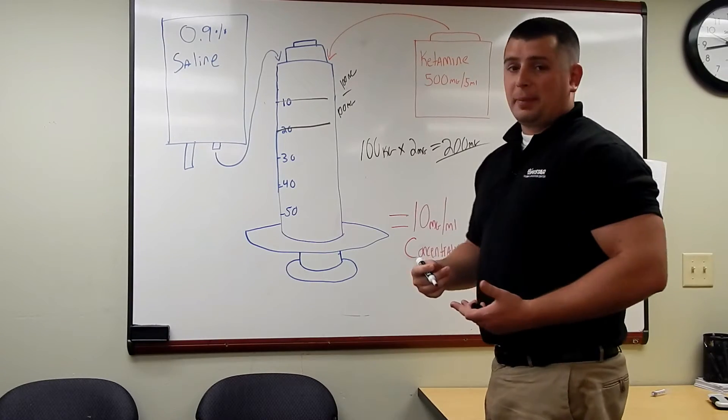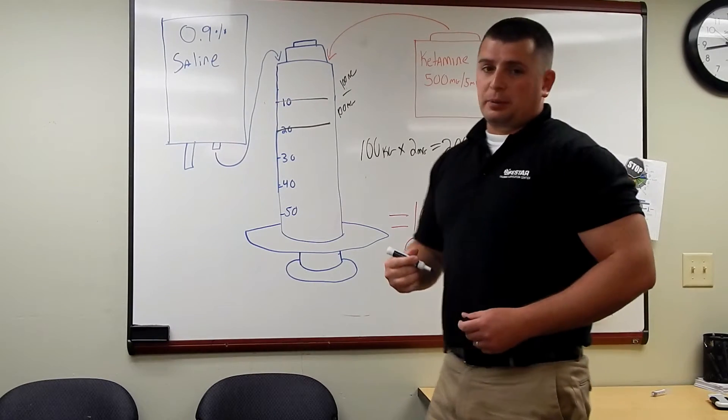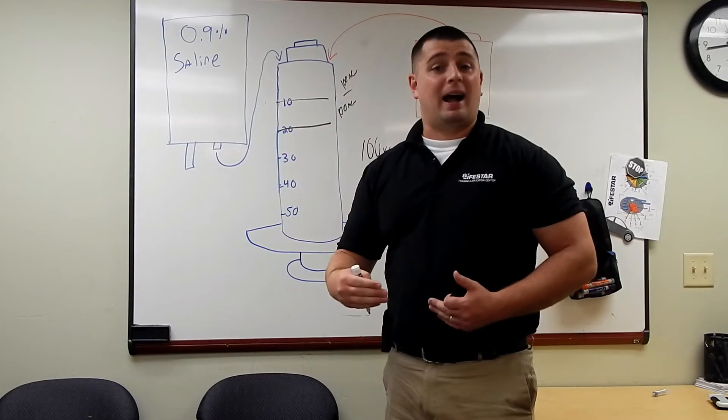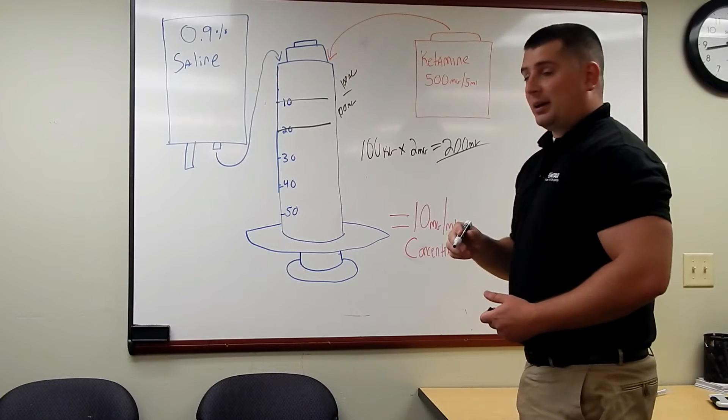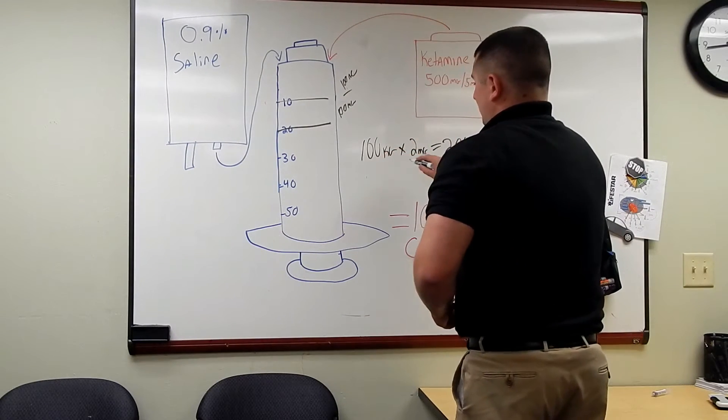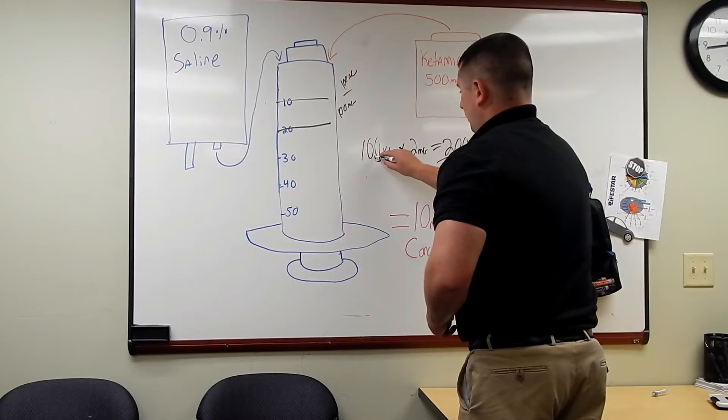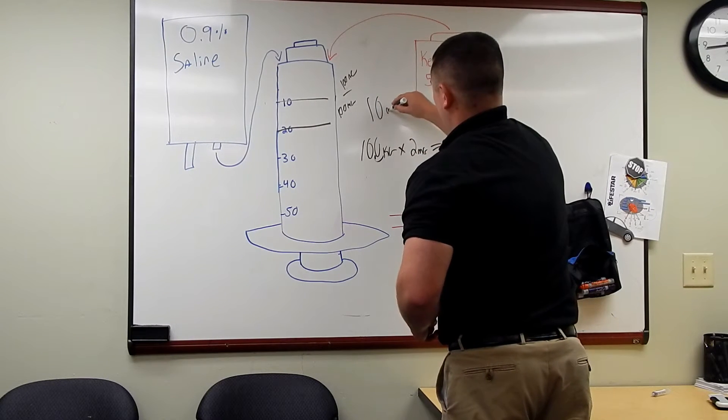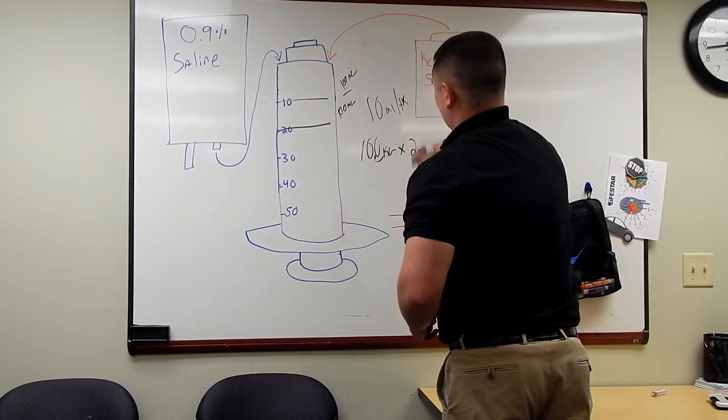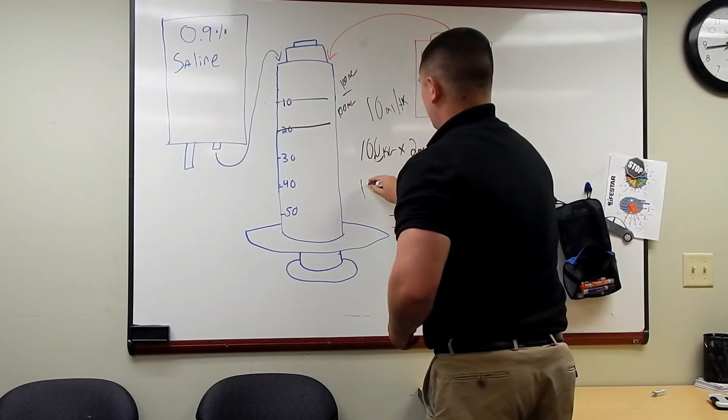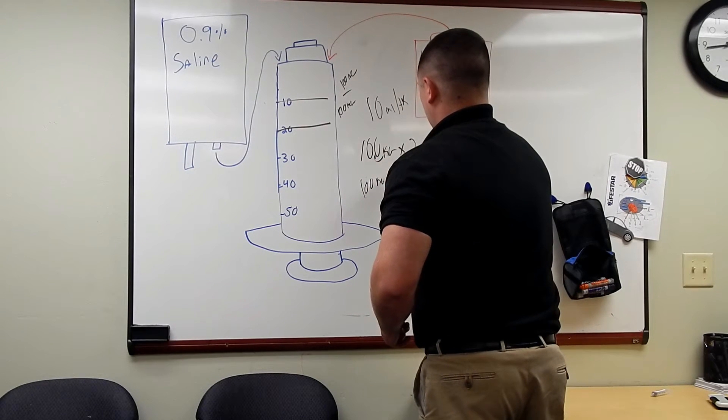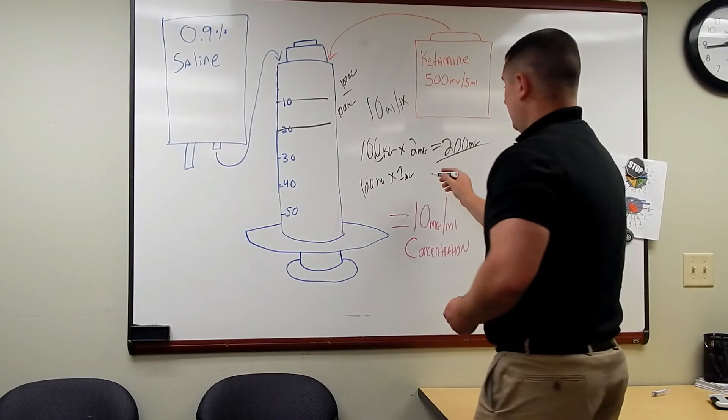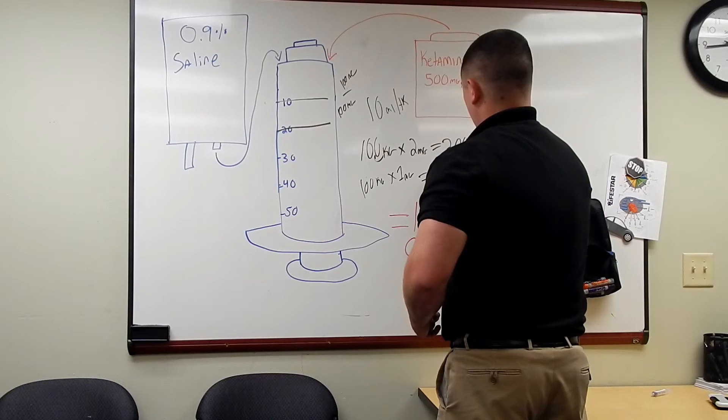Now I'm going to start my maintenance drip. Your maintenance drip for ketamine is usually 1 to 2 milligrams per kilogram per hour. What's really cool about this is you take how much they weigh in kilograms, remove the decimal, and we start our maintenance drip at 10 mLs an hour. That's going to be 100 kilograms times 1 milligram per kilogram, which equals 100 milligrams. And we said for every 10 mLs there's 100 milligrams.